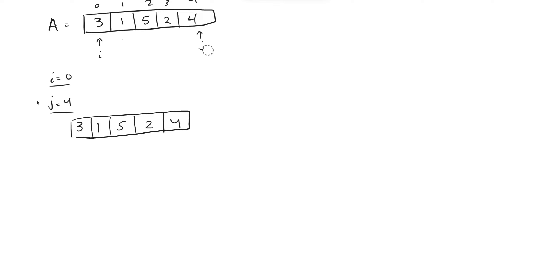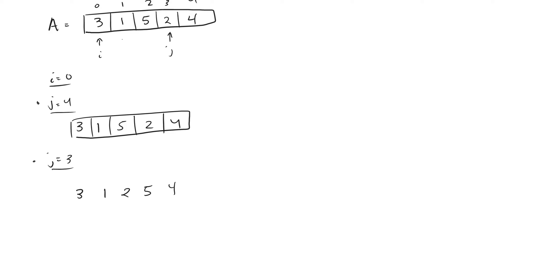We delete J and our pointer, then move J down to three. We ask: is A[J] less than A[J-1]? And the answer is yes. So we actually need to do some swapping — we swap A[J] with A[J-1] because they're out of order; we want ascending order and these are obviously not in ascending order. We swap them and then we're left with three, one, two, five, and four.